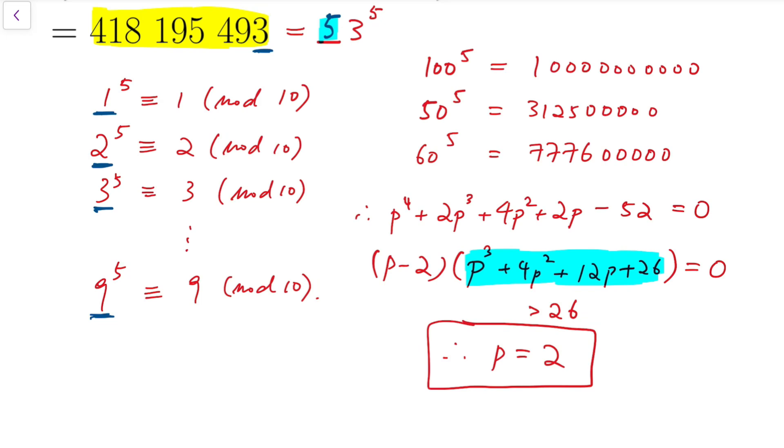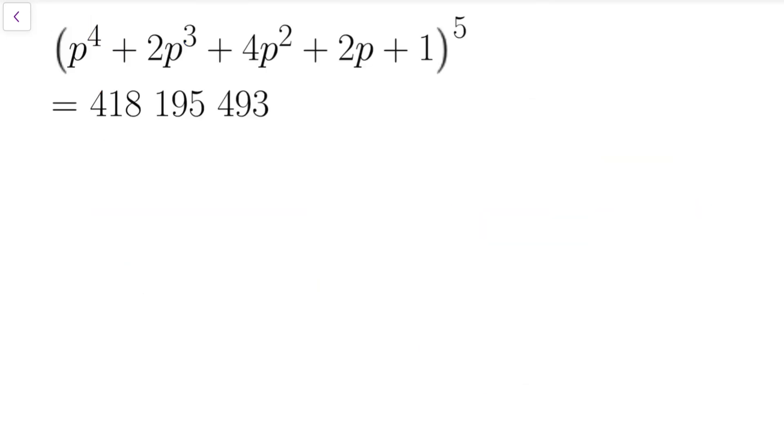So this is the first approach. The second approach is even simpler. Notice that this number at the right is an odd number. So if we have to find the solution for p, that means the base at the left must be an odd number. So that means p to the power 4 plus 2p cubed plus 4p squared plus 2p plus 1 must be odd.